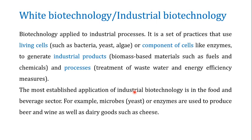Another important type is white biotechnology, also known as industrial biotechnology. It is biotechnology applied to industrial processes — a set of practices using living cells such as bacteria, yeast, or algae, or components of these cells such as enzymes. Whether using whole living cells or cellular components, the aim is to produce industrial products such as biomass-based materials, fuels, and chemicals, and to apply them in processes like wastewater treatment and energy efficiency measures.